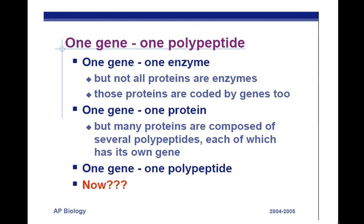One gene, one polypeptide. A gene is a sequence of DNA that codes for a protein. However, that's not always true, and we're going to explain why right now. A polypeptide is a name for a chain of amino acids chained together that could become a protein. However, there's some difficulty with this definition, and I'll explain why.